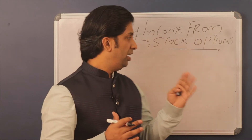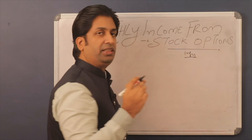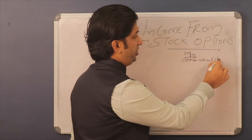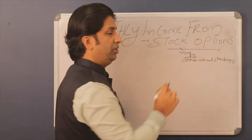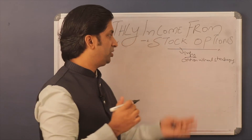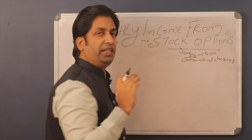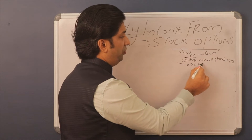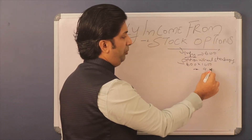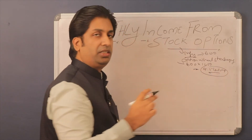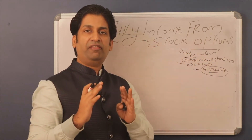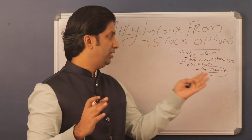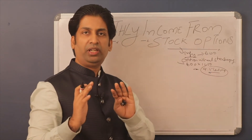Now let's look at the second way to generate monthly income from stock options — the Option Wheel Strategy, using Infosys as the example. The lot size of Infosys is 600. If you multiply 600 into 1650, you need approximately 9 to 9.5 lakhs of capital to get into this trade. Once you have this 9.5 lakhs, you can generate monthly income from stock options.